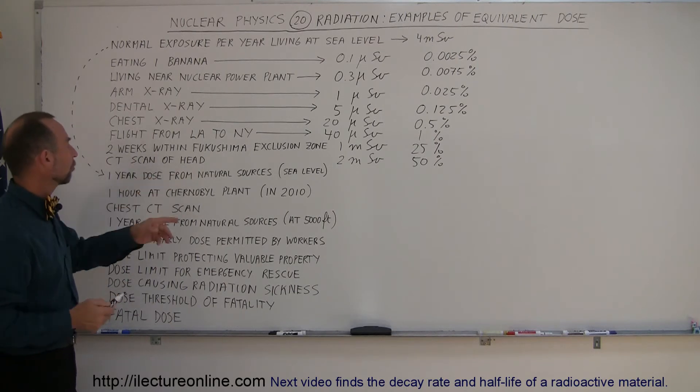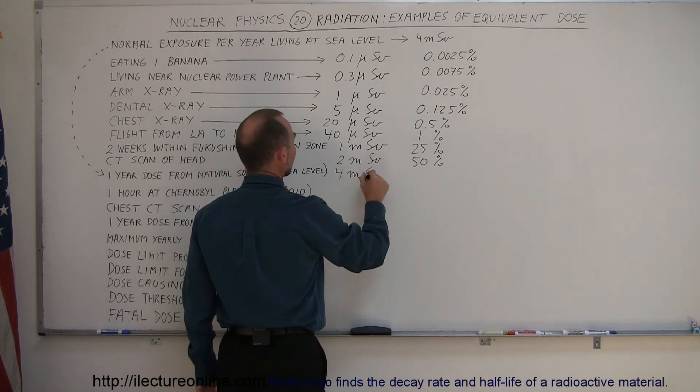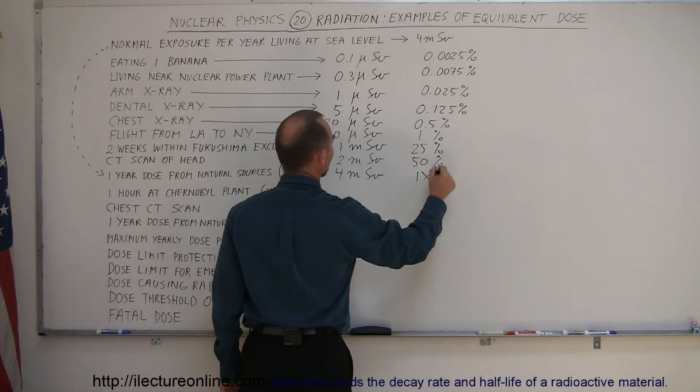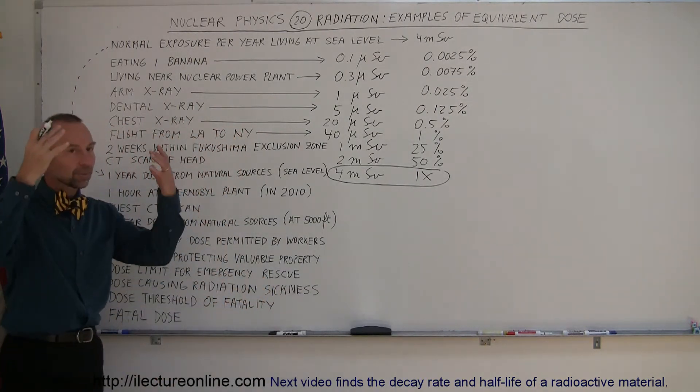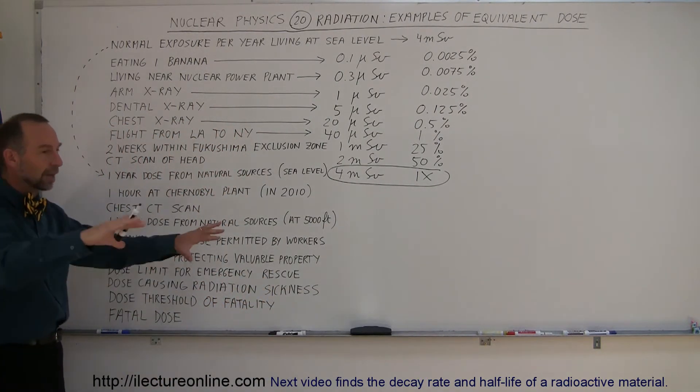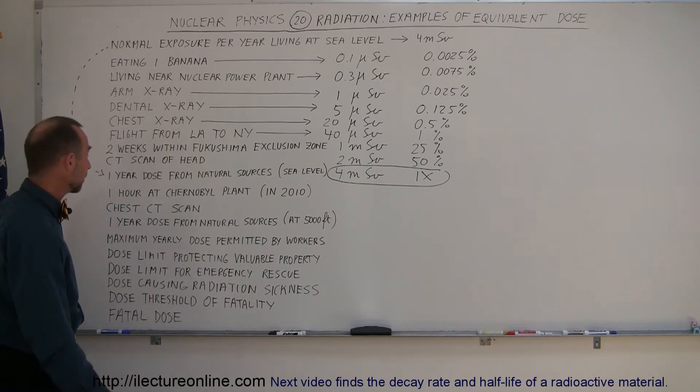One-year dose from natural sources, that was our standard. That would be 4 millisieverts, 1 times the normal yearly amount that we receive from nature. Most of it comes from space, but some from the ground and radioactive materials around us, sometimes even radioactive materials in our home from the building materials.